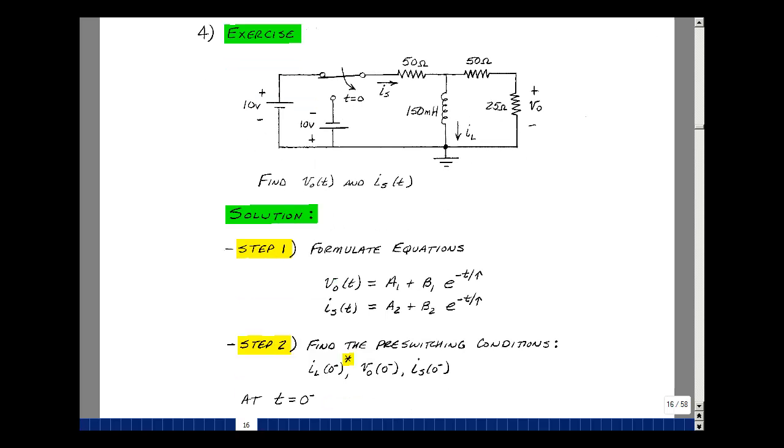Our first step is to formulate the equations. Since we have only one inductance, we have a first-order differential equation, and the form of the solution is A plus B e to the minus t minus t0 over tau. But since our switch is switching at t equals 0, then t0 is equal to 0. Given two things that we're solving for, let's call this a1 and b1, a2 and b2.